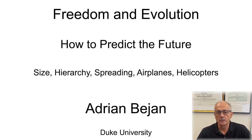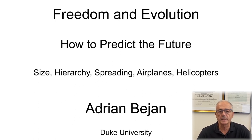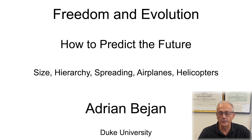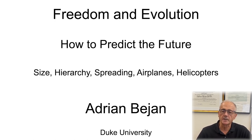Evolution — change after change in a particular direction — should not be confused with revolution, which means the upturning of that particular sequence of change. In the second line, 'to predict the future': the future is the other half of the pair in which the past resides. To predict means to see with the eyes of the mind before you look at the object.